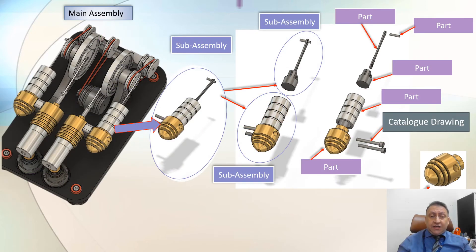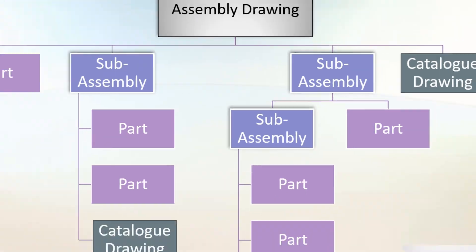If this wasn't clear, let's look at this example here. Here we have main assembly. Here we have sub-assembly, consists of this sub-assembly. These components here, they are divided into two sub-assemblies. These two as sub-assembly and this as a sub-assembly. Now we have each one of these parts: part, part, part, part, part, and these two bolts are for catalog drawing for standard item.